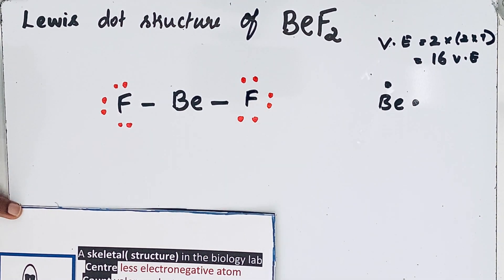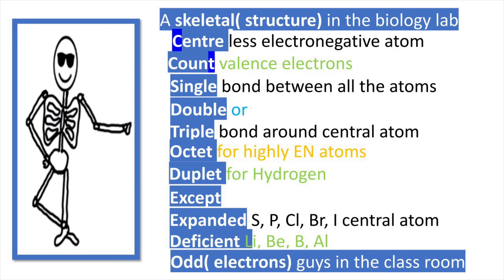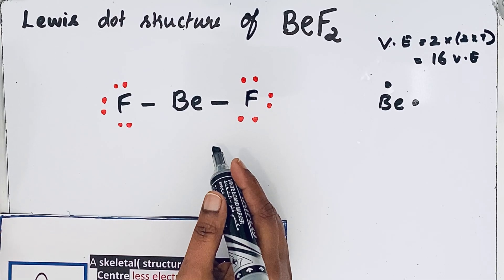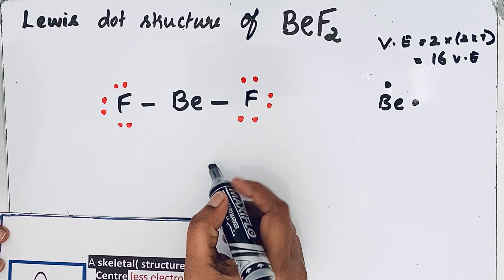Let us see that mnemonic once again: a skeletal structure in the biology lab, center, count, single, double, triple, octet, duplet, except expanded, deficient, odd guys in the classroom. Remember this mnemonic and you can easily write that Lewis dot structure very quickly. Thanks for watching.